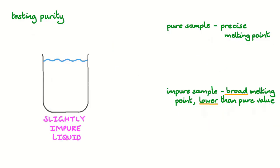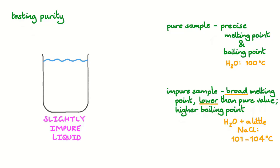But so far, we've been looking at mixtures of solids. What about mixtures of liquids? For pure liquids, the boiling point will be a very precise, repeatable value. Like for water, it's 100 degrees Celsius. If we add some sodium chloride to water, we may see the boiling point rise as high as 104 degrees Celsius. But bear in mind, there are some exceptions where adding something to water will decrease its boiling point rather than increase it. But generally speaking, when looking at impure samples, we expect a broad melting point lower than the pure value, and a higher boiling point.